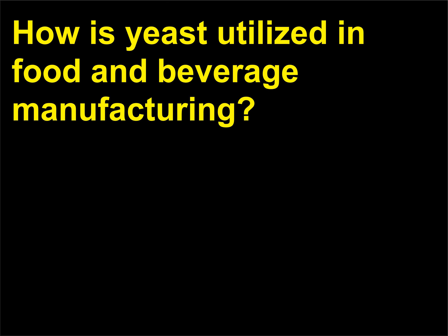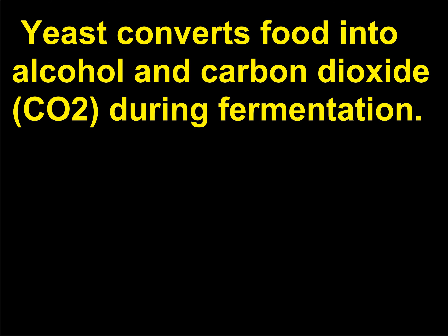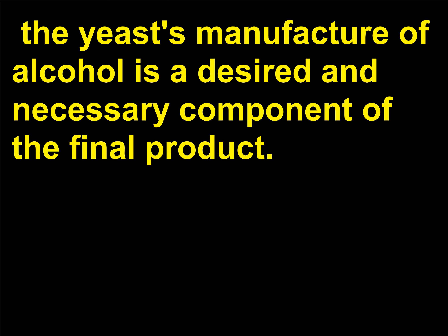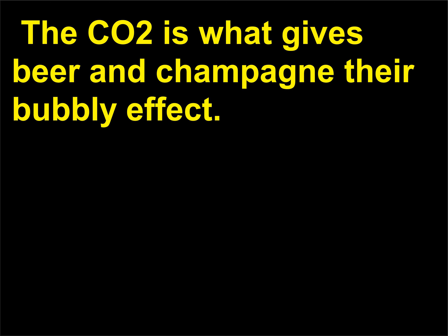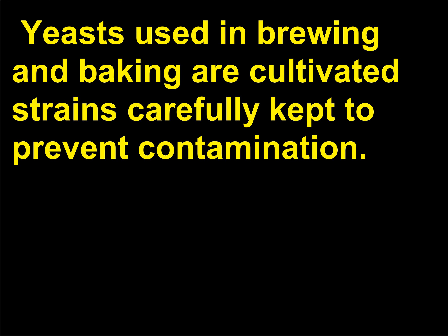How is yeast utilized in food and beverage manufacturing? Yeast is used in wine making, beer making, and bread making. Yeast converts food into alcohol and carbon dioxide (CO2) during fermentation. In the manufacture of wine and beer, the yeast's production of alcohol is a desired and necessary component of the final product. The CO2 is what gives beer and champagne their bubbly effect. Bread making requires the CO2 produced by yeast for certain doughs to rise. Yeasts used in brewing and baking are cultivated strains carefully kept to prevent contamination.